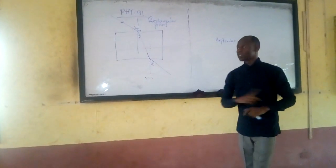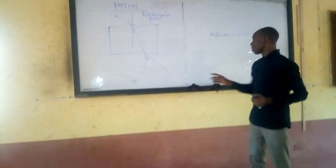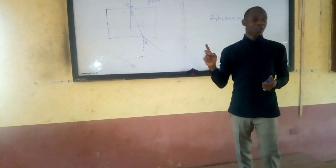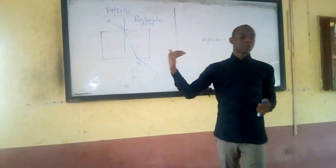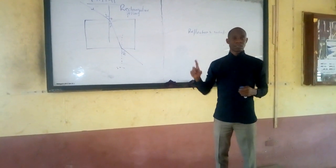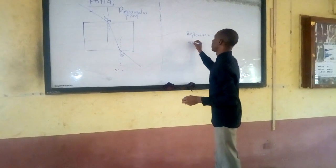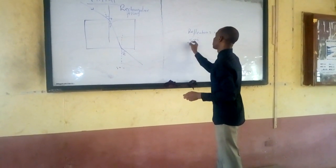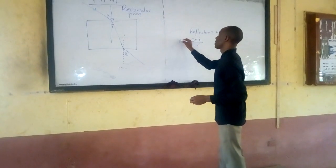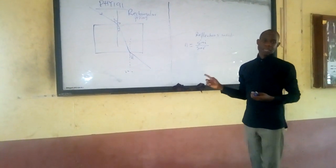Then we have Snell's law, which is what guides everything we do about the prism. Snell's law tells us that the ratio of the sine of the angle of incidence to the sine of the angle of refraction is a constant. That constant is called the refractive index.